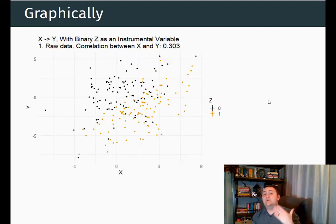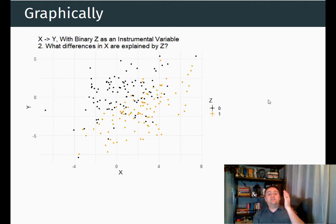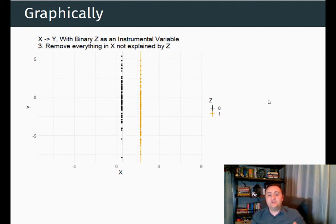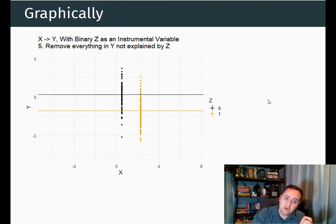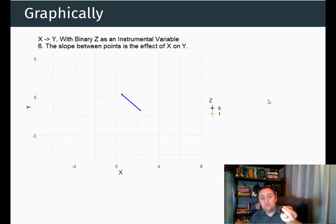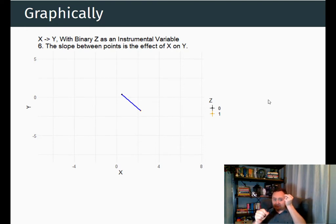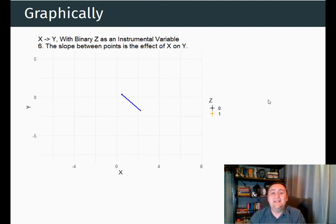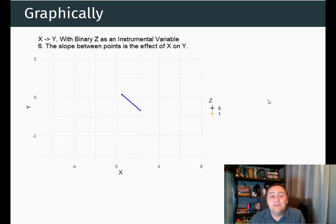Here's how it works graphically if we have a binary instrument. We have some data here with a positive relationship between them, but we are going to focus on just the part of the variation that is explained by our instrument and get rid of all the other variation. We have one average x and y for people who have the instrument equal to one, and one average x and y for people who have the instrument equal to zero. Those are the only points that count because we only care about the part explained by the instrument. Then we look for the relationship between x and y just between those two points, and that is our effect of interest.